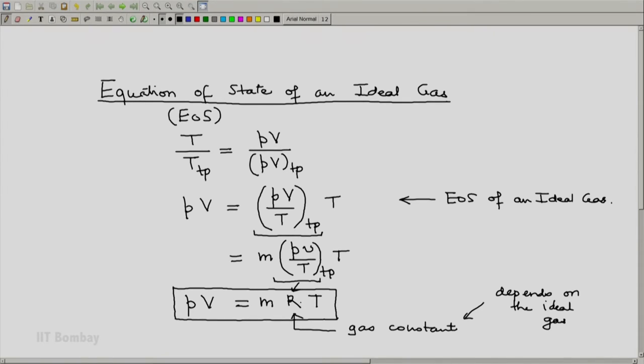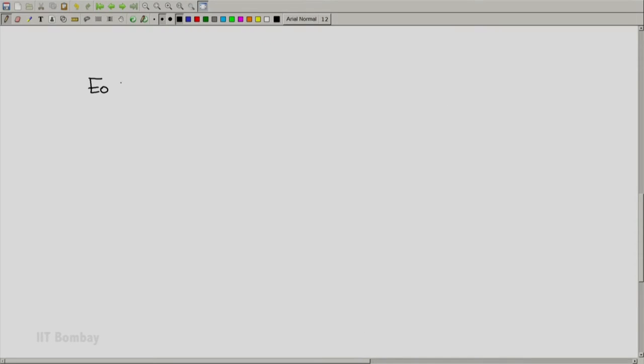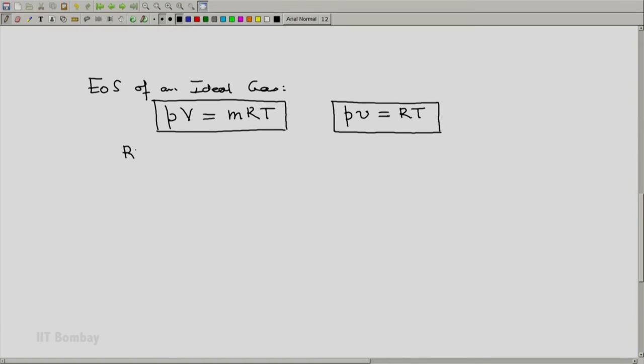So we should remember that the equation of state of an ideal gas can be written as PV equals MRT. Or if we divide throughout by M, then on the left hand side we get V by M, which is known as the specific volume. So you end up with PV equals RT, where R is the gas constant for that particular gas.